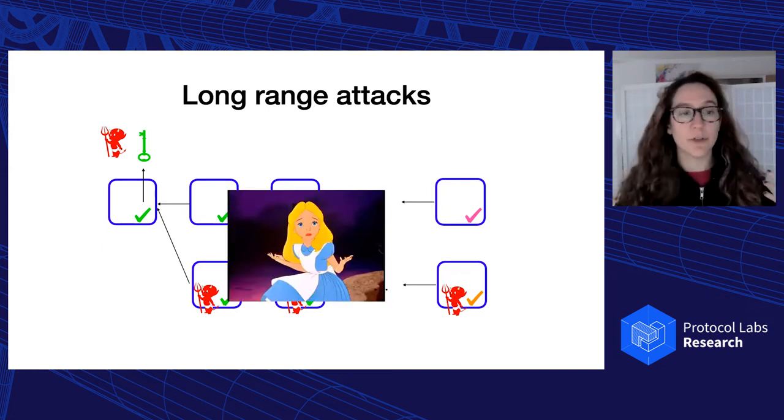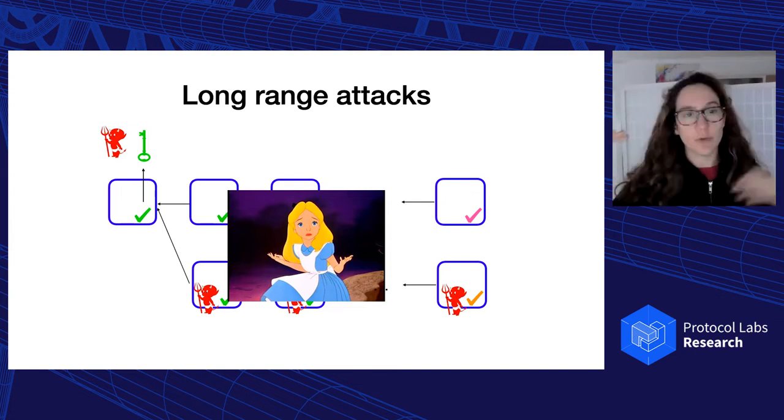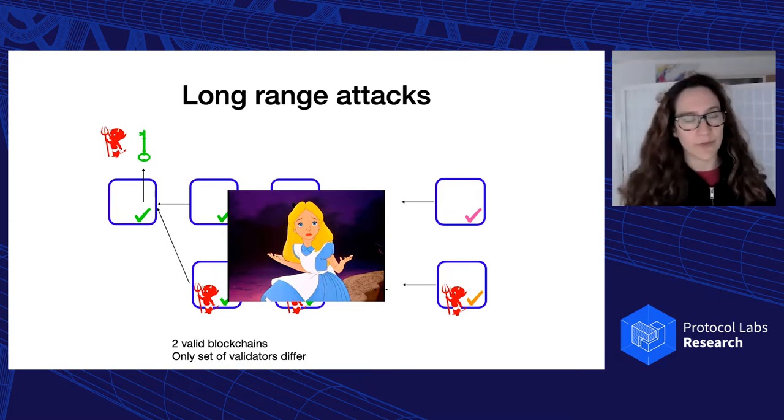So we can see that these attacks are very problematic. Because if we have some user, at least that has been offline for a long time, she will wake up, come back online, and she will see those two chains that looks both perfectly valid. And there's no way of telling which one is the right one, because they both look perfectly legitimate.